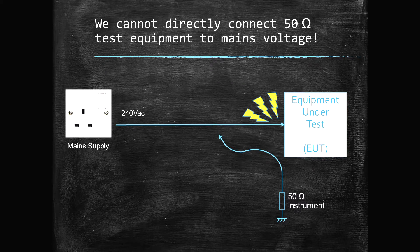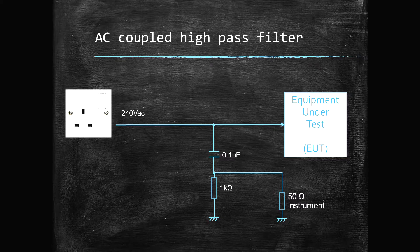Typically we'll be using a 50-ohm instrument, whether that be an EMC receiver, spectrum analyzer, or the 50-ohm input on your scope. We can't directly connect that to 240V mains or our instrument is going to fail. The connection is made via a LISN, and internally in the LISN we have essentially a high-pass filter, so that's going to filter out our 240V 50Hz and just pass the RF elements we want to measure — typically in either the 9kHz or 150kHz up to 30MHz range.